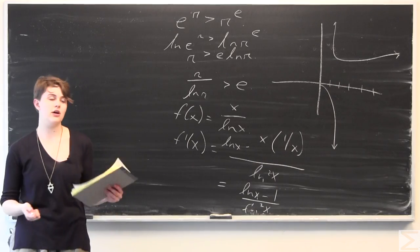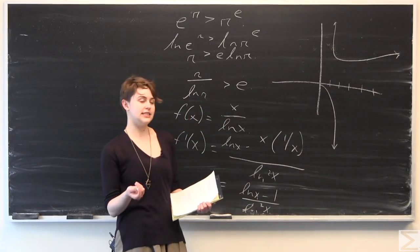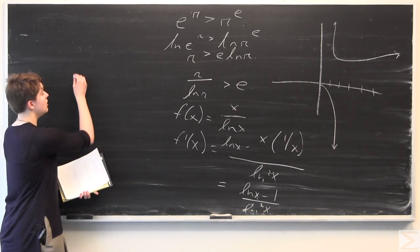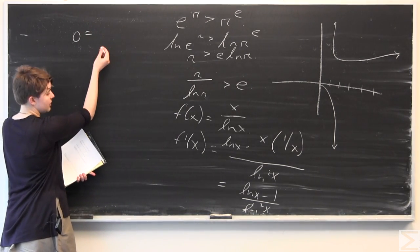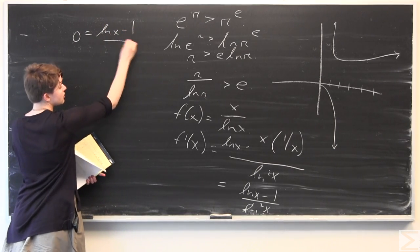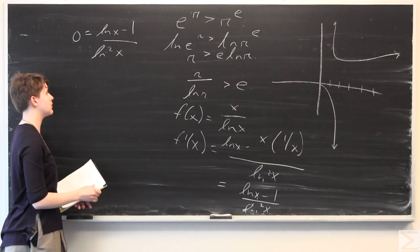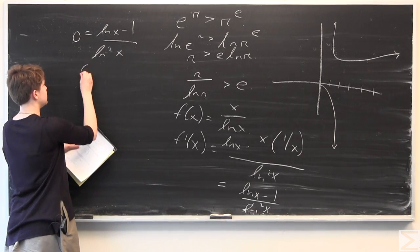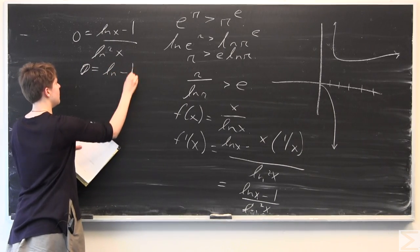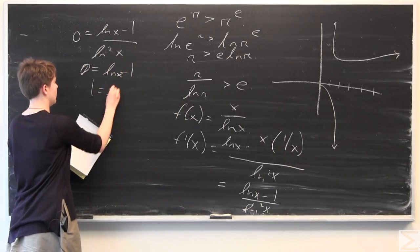To find our extreme value we set this equal to 0. So 0 equals ln x minus 1 over ln squared of x. We multiply both sides by ln squared of x, giving 0 equals ln of x minus 1. Solving for x, we get 1 equals ln x, or x equals e.